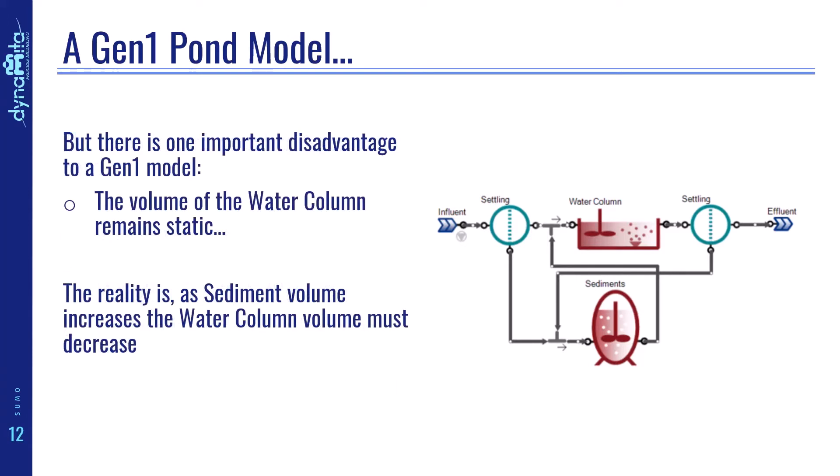But there's one important disadvantage to a Gen 1 model. The volume of the water column remains static. The reality, however, is that as the sediment volume increases, the water column volume must decrease.